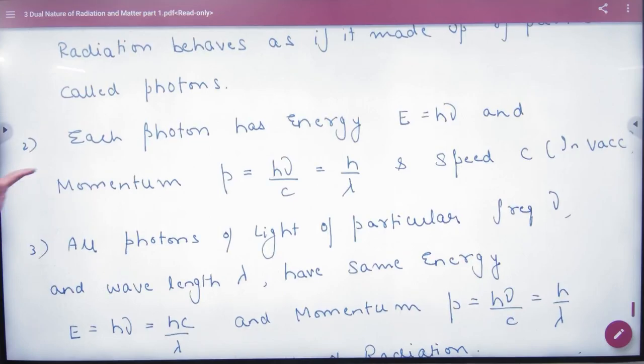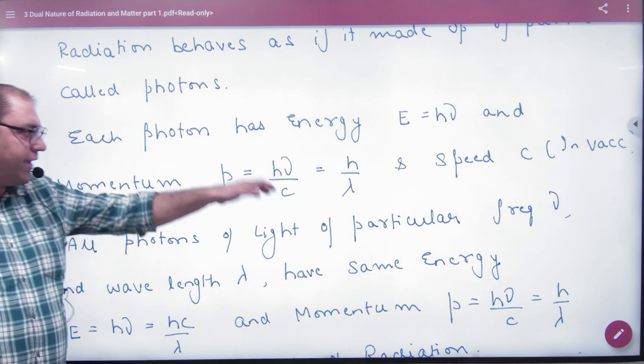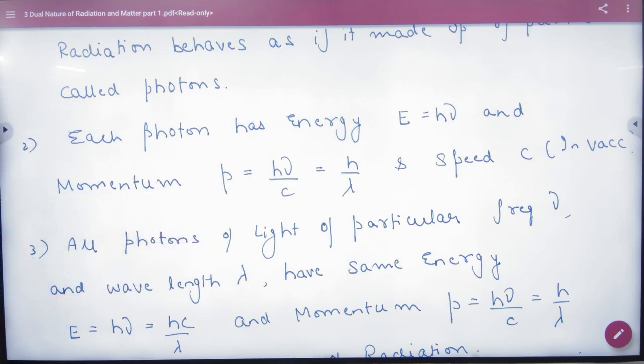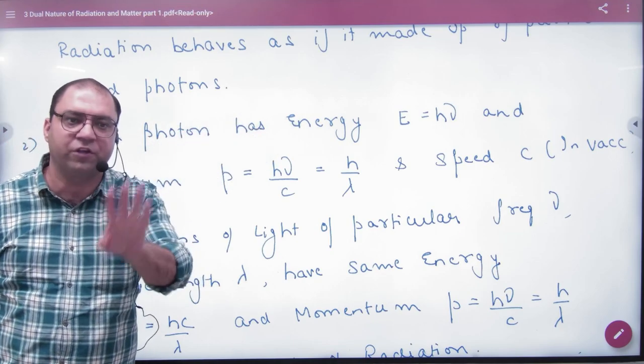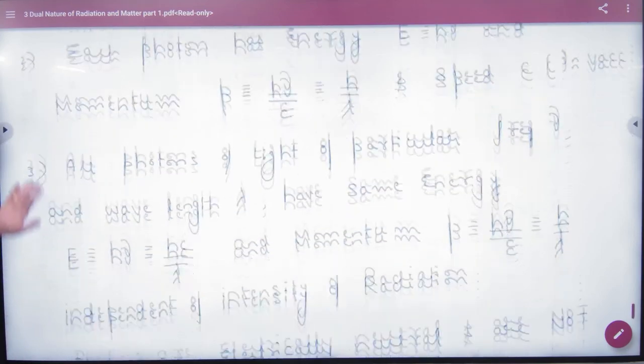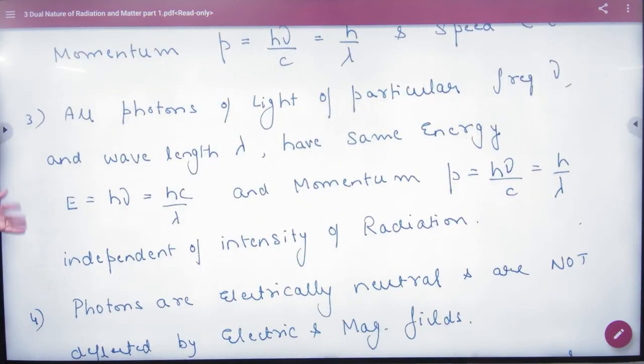Point number two is, each photon has energy E is equal to h nu. And momentum is h by lambda. We will prove this today. And what is speed? C. Now, the frequency of radiation is not radiation. The frequency of photon is nu. All photons of light and particle frequency nu and wavelength lambda have same energy.